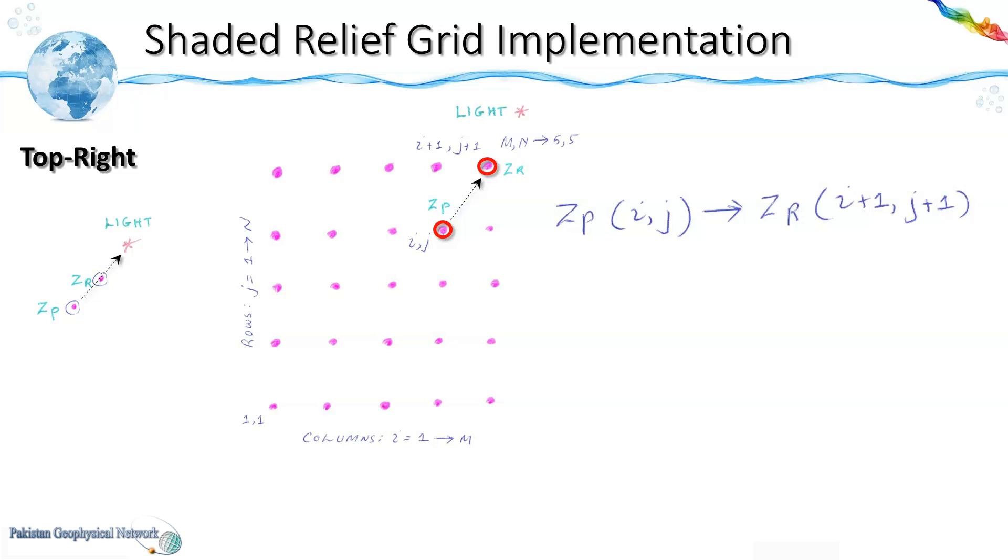And in this case the loop for i would be ranging from 1 to m minus 1 and for j it would be ranging from 1 to n minus 1. And shaded relief would be computed for these nodes within this green box.